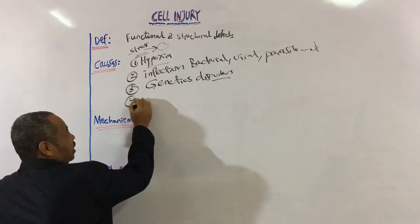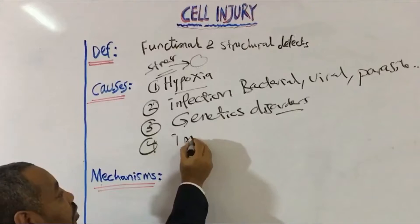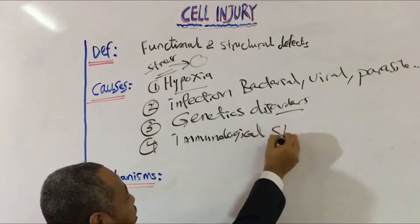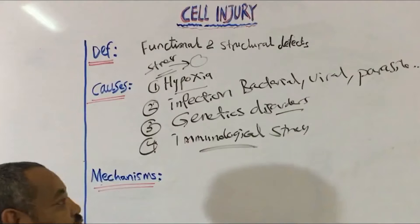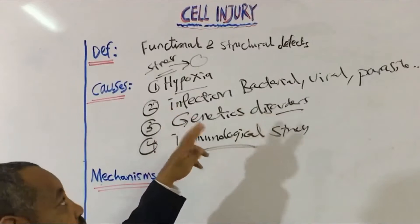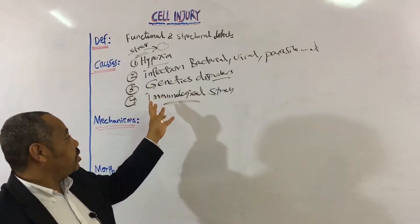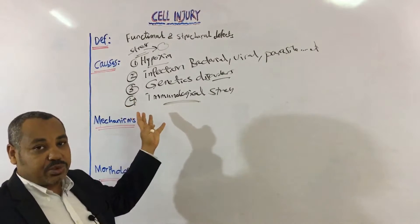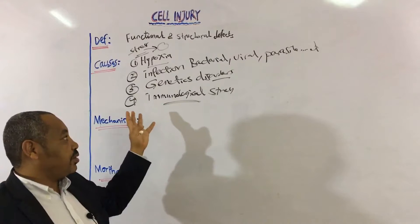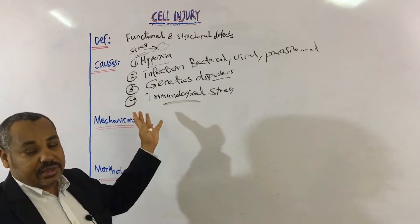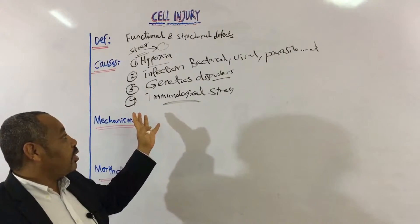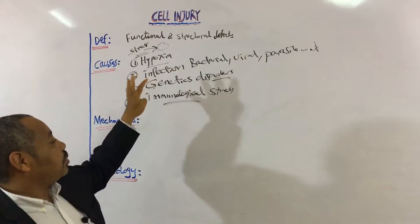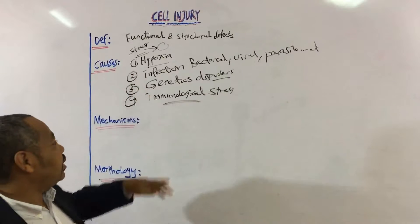Number four is immunological stress. Immunological stress may also be a stress on the cell resulting in cell injury. Whatever the immunological reaction is — whether hypersensitivity reaction type 1, type 2, type 3, or autoimmune diseases — all of these will have some kind of stress on the cell, and the result is cell injury.